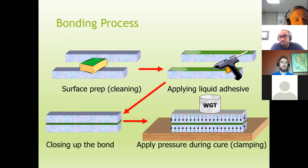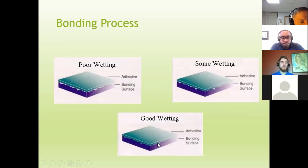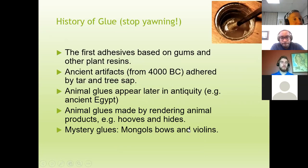In composites, the glue itself doesn't provide much structural strength — the strength comes from the fiberglass, Kevlar, or carbon fiber. The glue allows the fibers to transmit loads. Good wetting is also important: you can think you've covered something with adhesive but actually have very poor connection with the substrate surface. Good wetting means uniform, complete contact with the bonding surface.